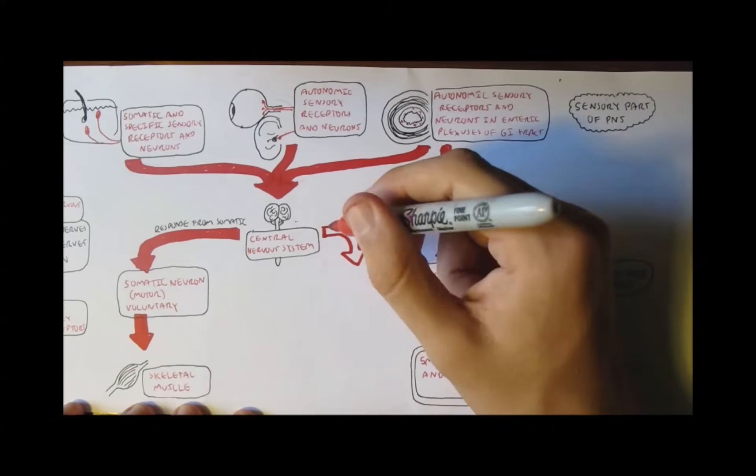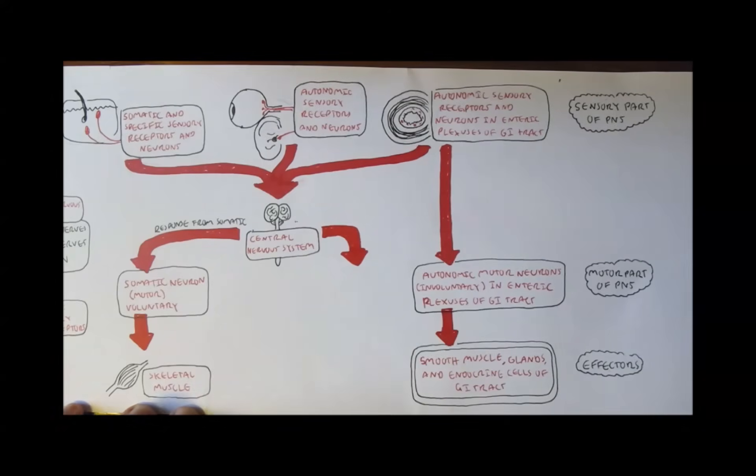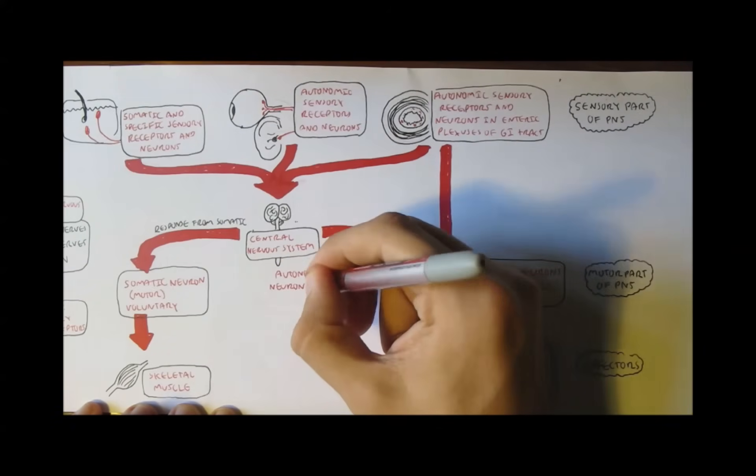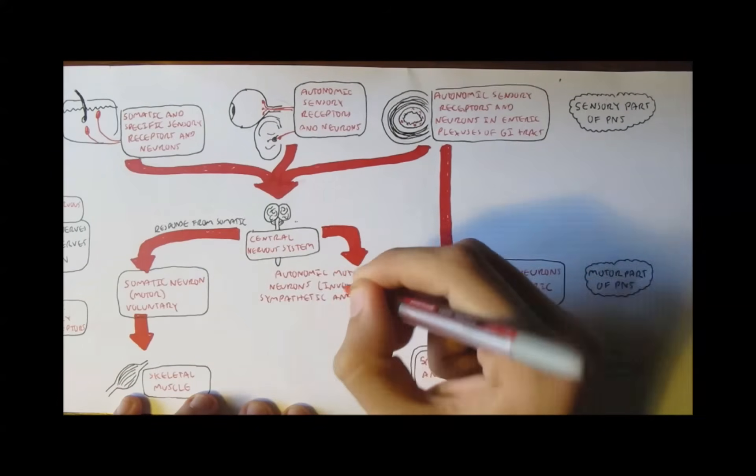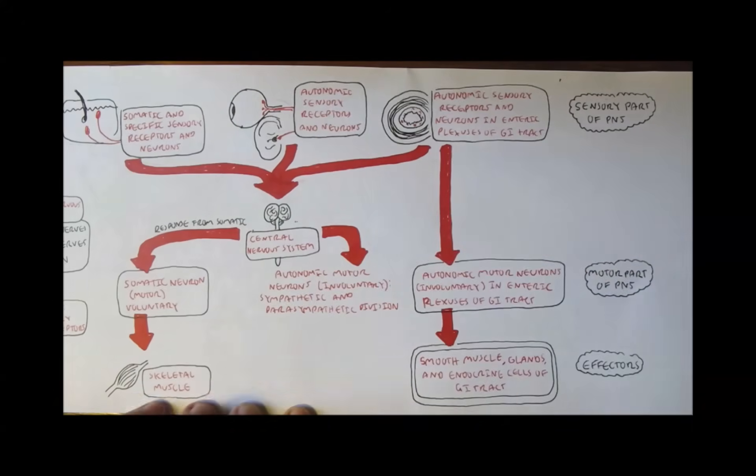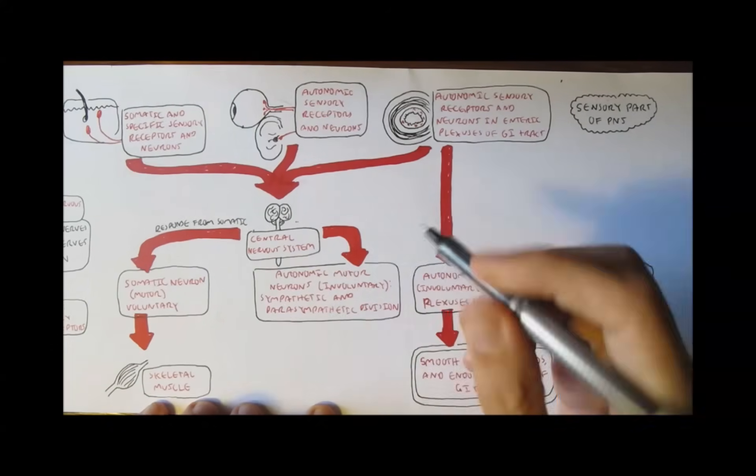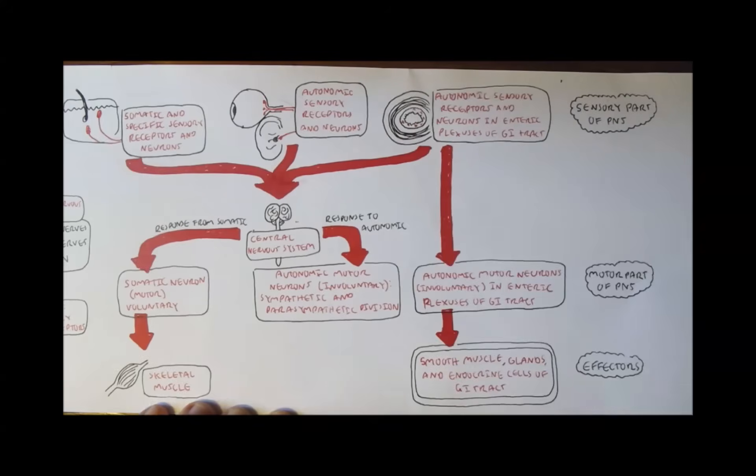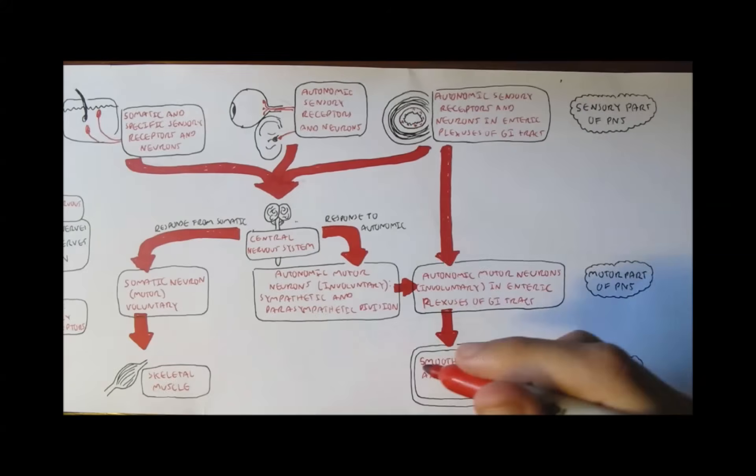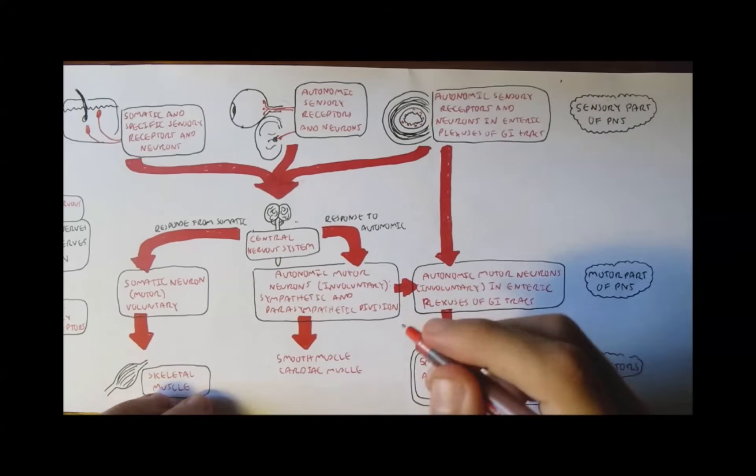Or two, the CNS will respond to the autonomic stimulation, and so the response will be sent via the autonomic motor neuron, which are involuntary. The autonomic motor neurons will send signals down the sympathetic or parasympathetic divisions, targeting smooth muscles or cardiac muscles or other glands.